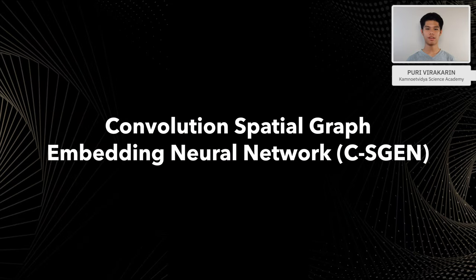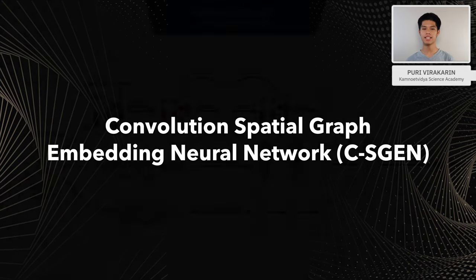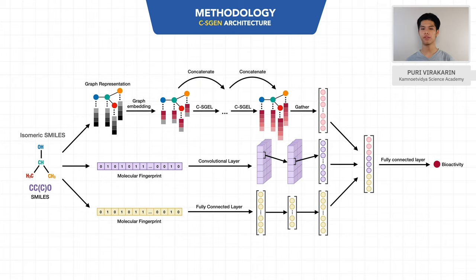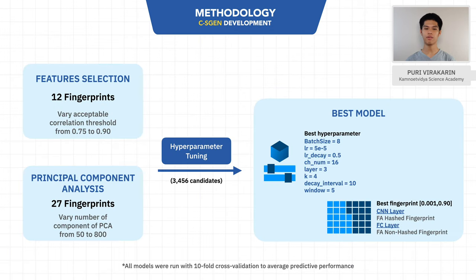Lastly, the convolutional spatial graph embedding neural network or CSGEN. The CSGEN algorithm comprises CSGEN layers, fully connected layers, and convolutional layers. For CSGEN layers, molecular structure was encoded into graphs and fed into this layer. But for the fully connected layers and convolutional layers, molecular descriptors were used as input. The outputs from these layers were concatenated into the final molecular representation to predict the bioactivity. The CSGEN development process is similar to the CNN.